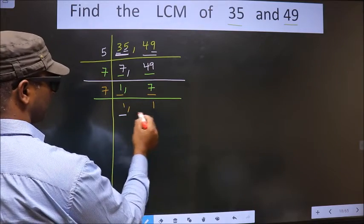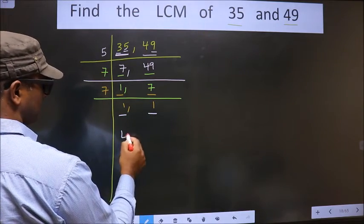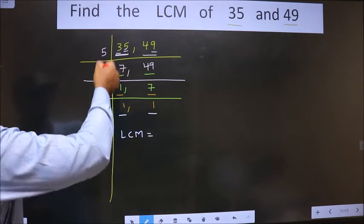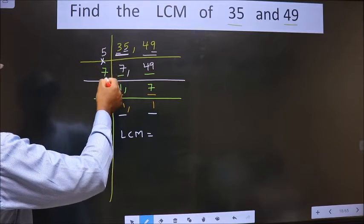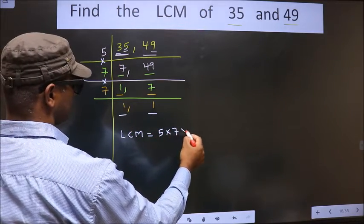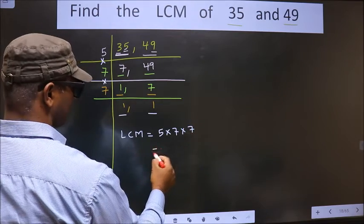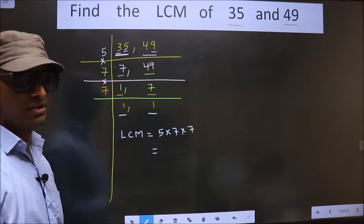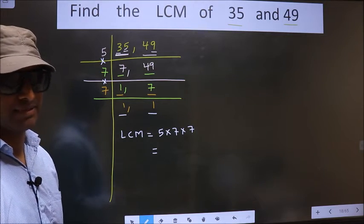Now we got 1 in both the places. So now our LCM is the product of these numbers. That is 5 into 7 into 7. You multiply all these numbers. Whatever number you get, that is your LCM.